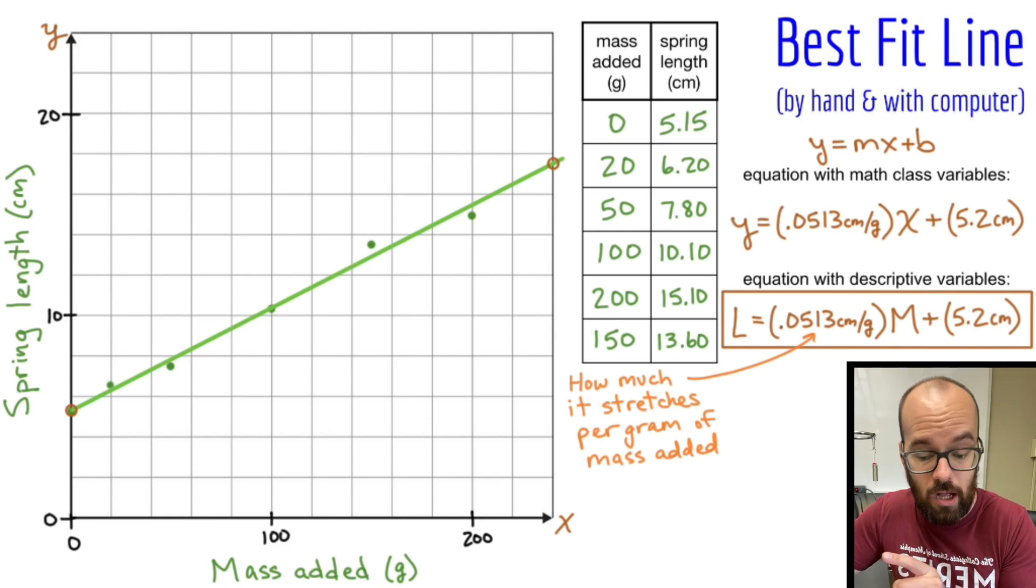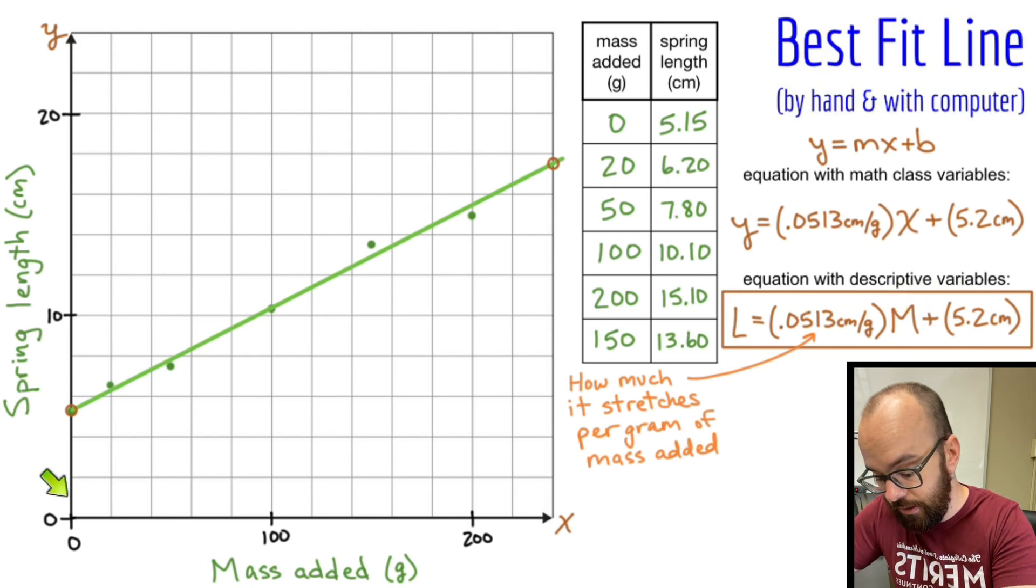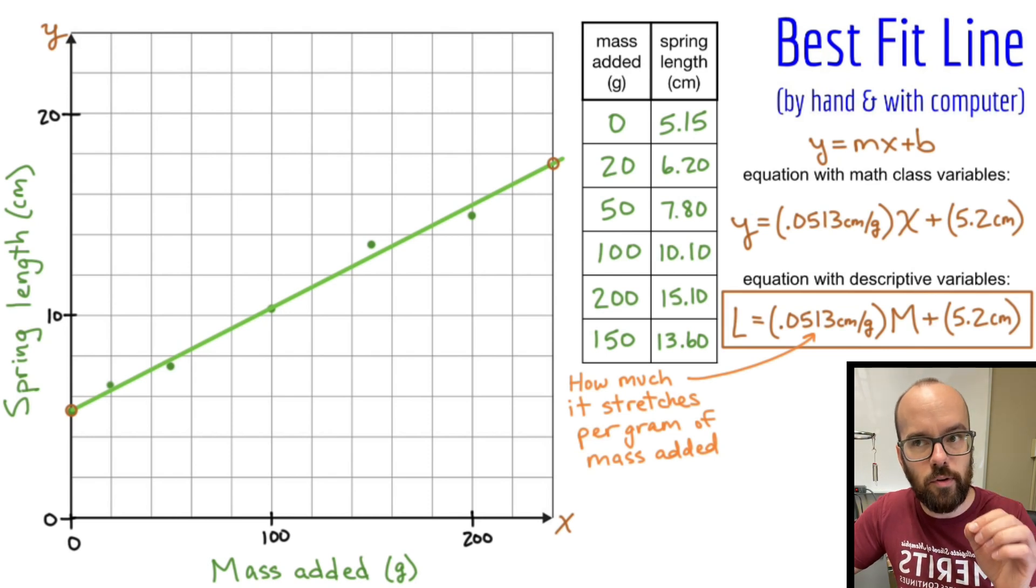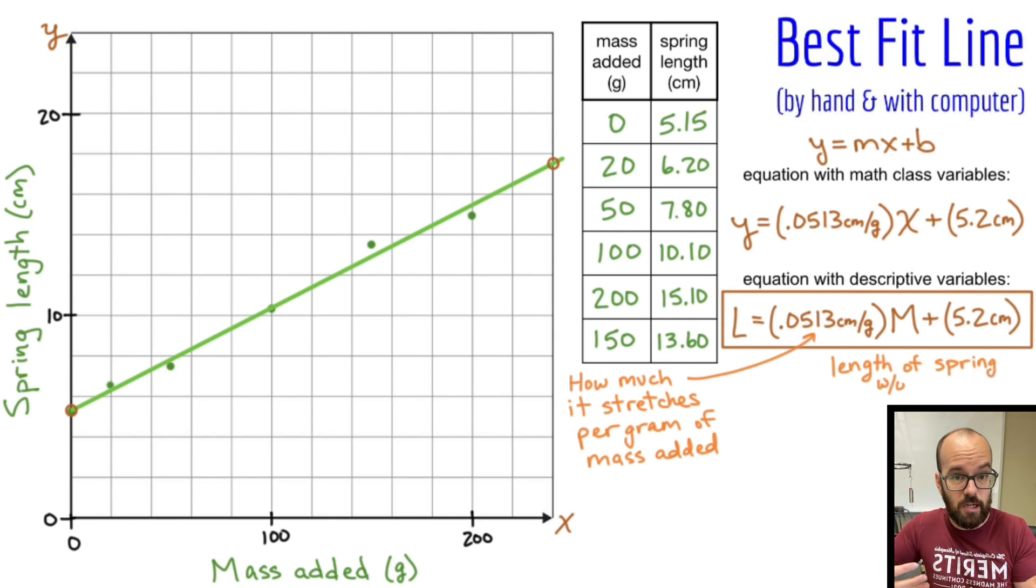Now our y-intercept has a meaning as well. This y-intercept is the length of the spring when M equaled zero. When M was zero, that means I hadn't added any mass. So really this is the resting length of the spring or the length of the spring without any mass added. So that's how you use a data set to draw a best fit line by hand. Now we're going to jump to the computer and see how to do it on Google spreadsheet as well as on Vernier graphical analysis.